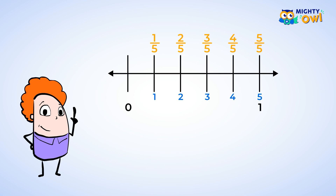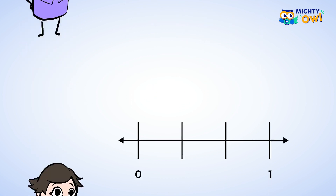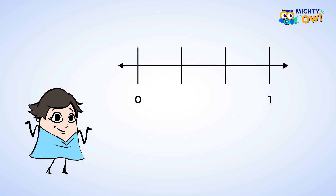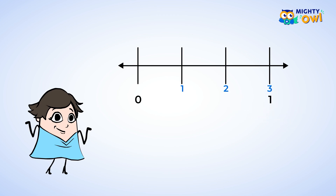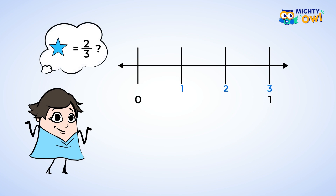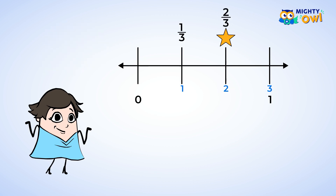Let's practice by identifying fractions on a number line. Here's a new number line. Start by looking to see how many parts there are. Remember, we start at 0 and count how many pieces there are until we get to 1: 1, 2, 3. There are 3 parts. Now let's place a star at 2 thirds. This tick mark would be 1 third, and so that means this mark would be 2 thirds. And that's a gold star for you!